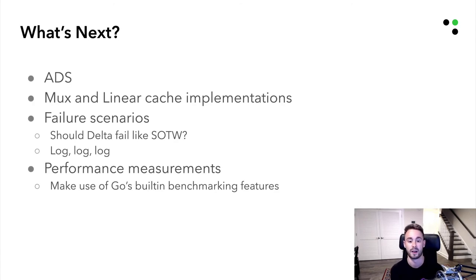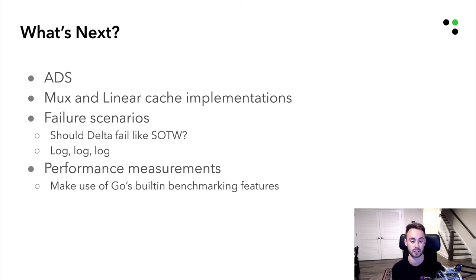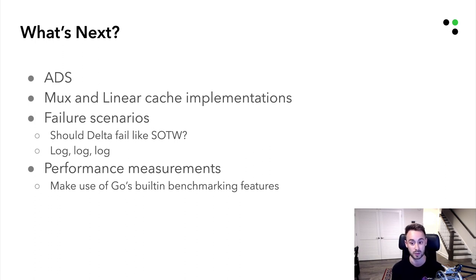What's next? I'm currently working on implementing ADS for incremental. All of the XDS services are complete, but ADS does need to be completed — I know there are some more features needed for that to actually be done, and I'm pretty sure that's probably going to be the most used implementation of incremental. The MUX and linear cache implementations need to be done as well. I also need to think about failure scenarios and test this in a real deployment. And I want to performance benchmark this — I want to see how it compares to State of the World and what kind of performance gains we're looking at.